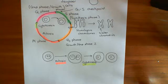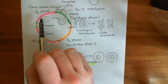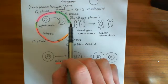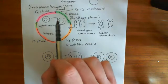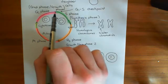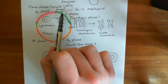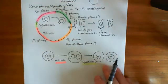Welcome to this second video on the retinoblastoma protein. In the first video we discussed the cell cycle overall, and we talked about how the transition from the first growth or gap phase to the S phase where you are copying the DNA is very, very important. So now what we're going to do is look at this transition in a bit more detail. How does a cell actually copy its DNA? What is the trigger that makes a cell copy its DNA?